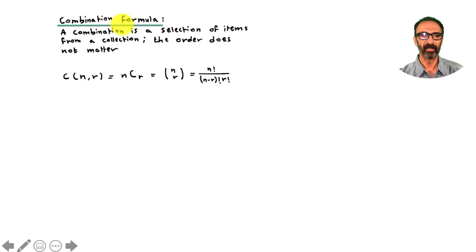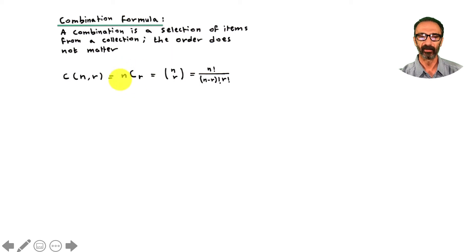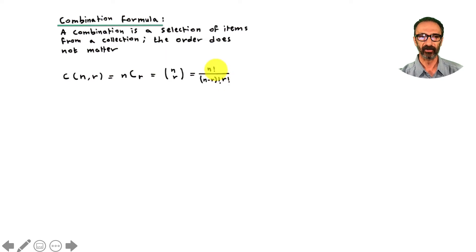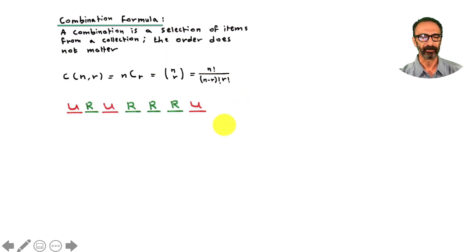The formula for combination is C(n, r) — meaning choose r items from n items. We sometimes write it as nCr or as a tall parenthesis with n on top and r on the bottom. The calculation is: n factorial divided by (n minus r) factorial multiplied by r factorial.